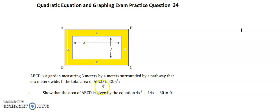If the total area of ABCD is 42 meters squared, we need to show that the area of ABCD is given by the equation 4x squared plus 14x minus 30 equals zero.